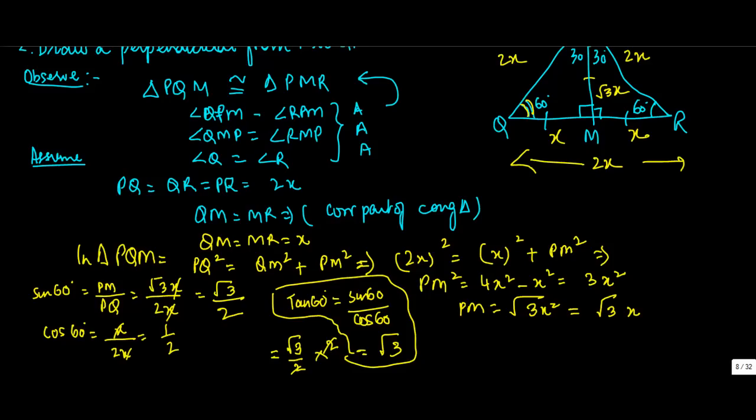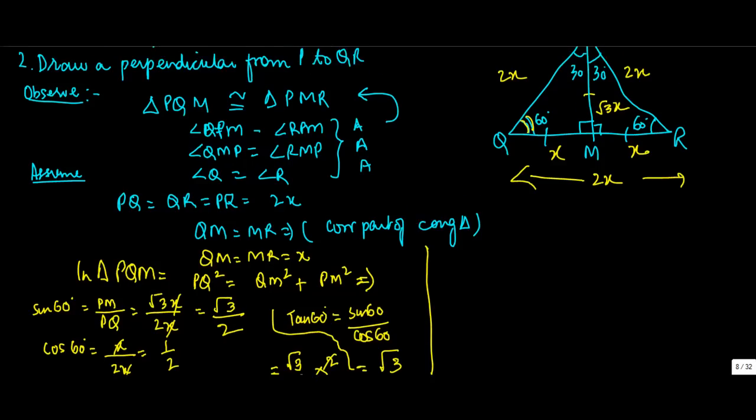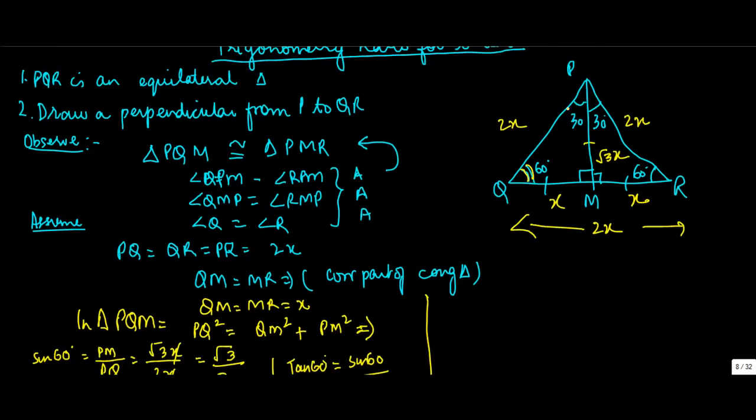Now let me just clean some part of the board to make way for calculations for 30 degrees. The others you can calculate by the reversal method. Now 30 degrees is this, so sin 30 degrees is equal to QM upon PQ, which is X upon 2X, giving 1 upon 2.